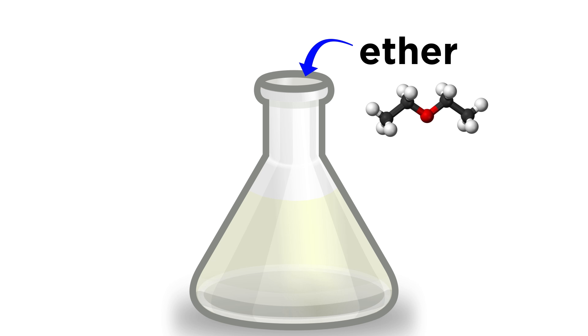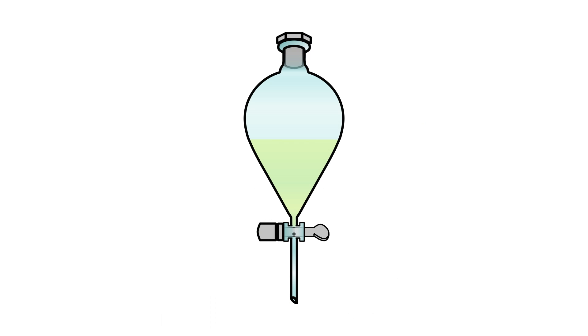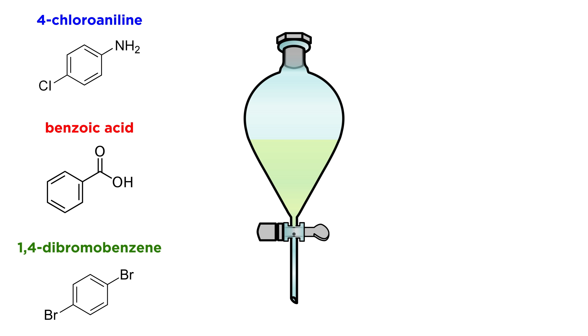Let's toss the mixture in a flask and dissolve it in ether, and then transfer over to our separatory funnel. Now let's think, is there some type of reaction that only one of these compounds might undergo that the others would not? Well 4-chloroaniline is somewhat basic because of this amino group. Benzoic acid, as the name suggests, is acidic. And dibromobenzene is neither. So what if we do some acid-base reactions?